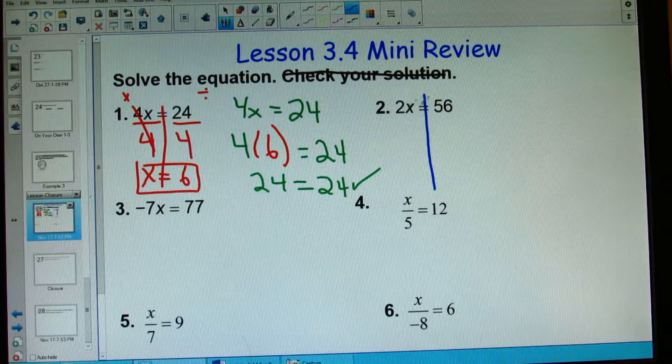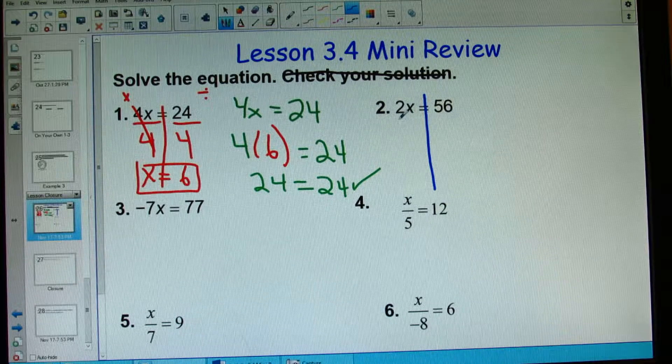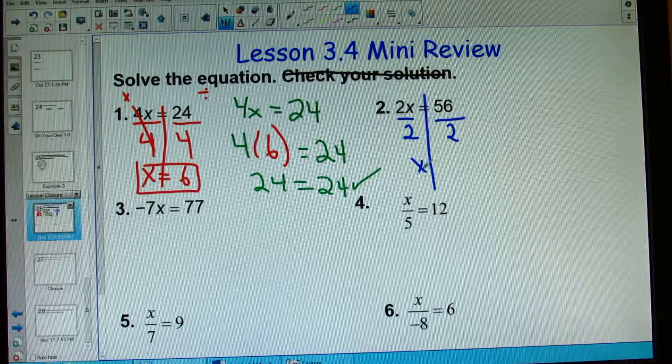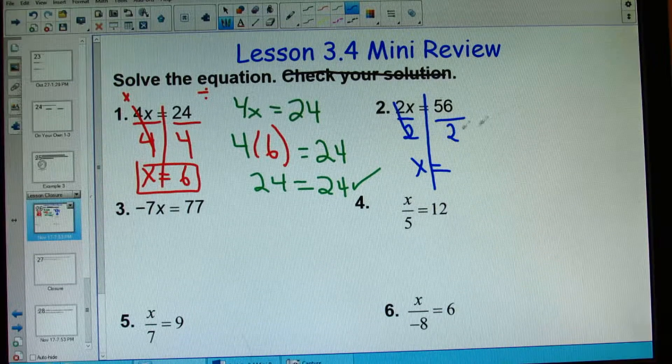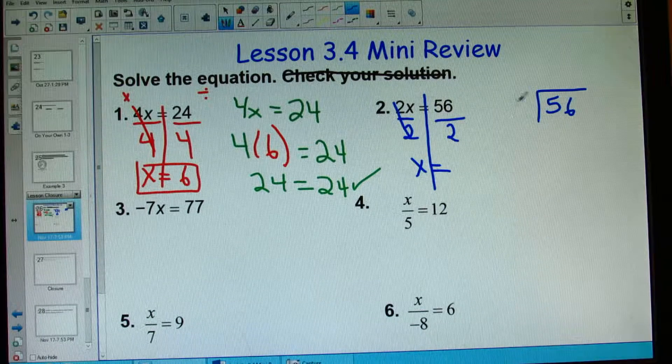Some more multiplying and dividing solving. Here's my equation. 2 times x equals 56. In order to get x isolated, I need to divide both sides by 2. My 2's will cross out. 56 divided by 2. Might have to do on the side. No big deal.